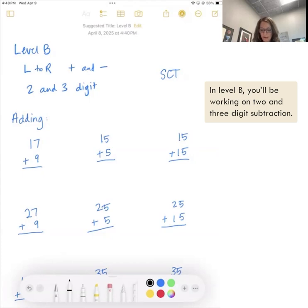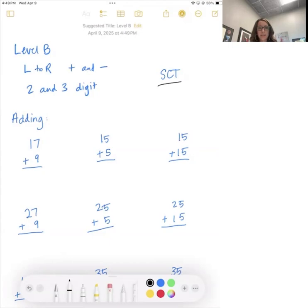The standard completion time, I have SCT written over here to the right. SCT is the standard completion time. There's a low and a high number of minutes that each packet should be completed in. Mostly in level B, it's two to three minutes per page. There are some packets like the three digit packets, the ones that are more involved take a little bit longer. Those are more like three to four minutes per page.